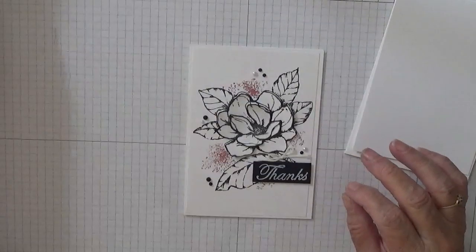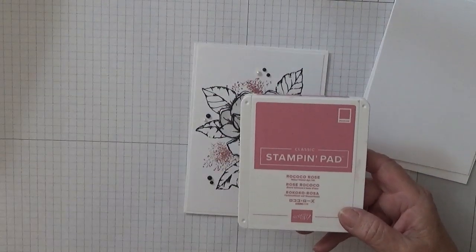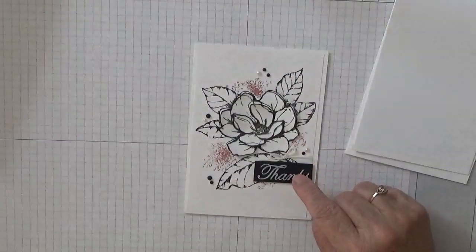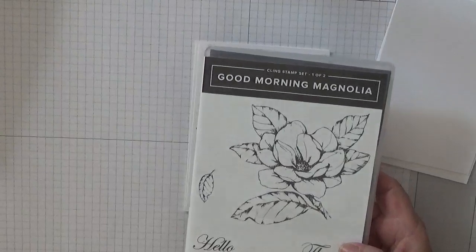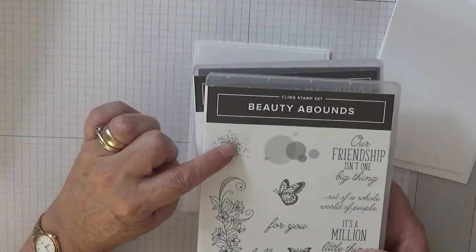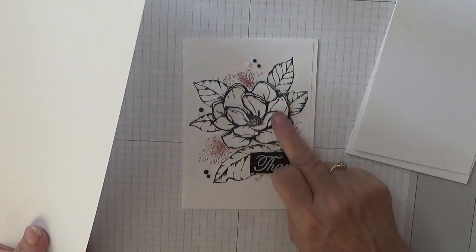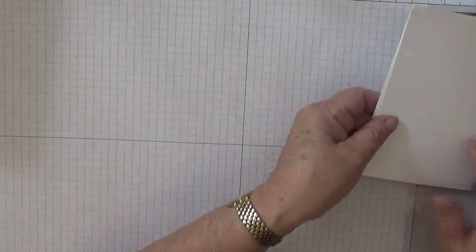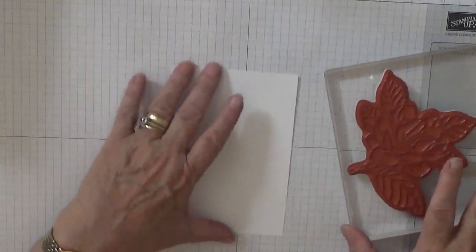So this will be cut down. The pink dots are with Rococo Rose, one of the new in-colors. The stamp sets I'm using are Good Morning Magnolia—we're going to be using the flower and the word 'thanks'—and Beauty Abound. We're just going to use that splatter mark. And I've also got an A4 sheet of white cardstock to stamp out two more flowers.